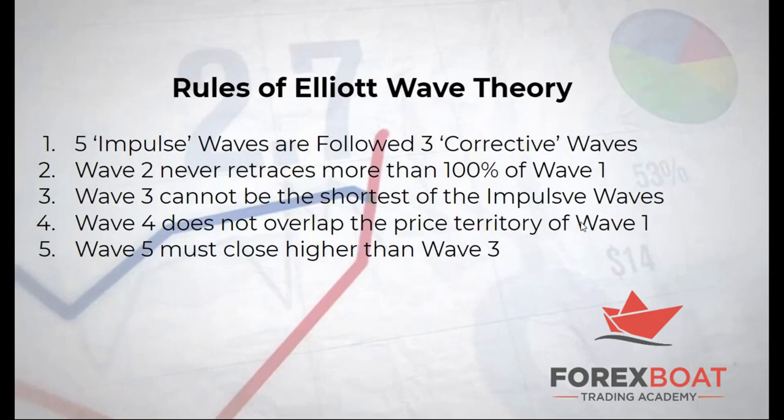A few other rules: the second rule is that wave two never retraces more than 100 percent of wave one — meaning the magnitude of wave two can never be more than the magnitude of wave one. Next, wave three cannot be the shortest of the impulse waves. Wave four does not overlap the price territory of wave one. Lastly, wave five must close higher than wave three.